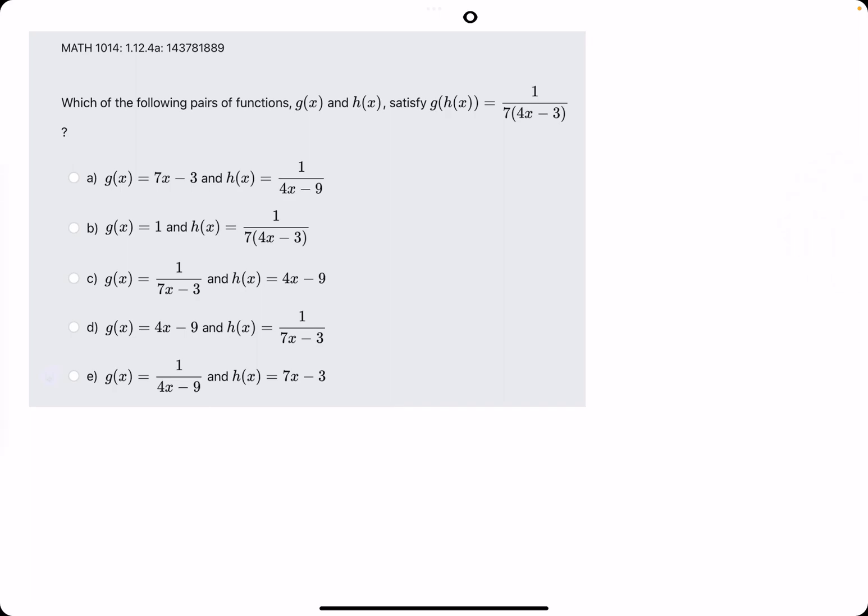You know, one of these options could actually form this g of h of x. So what does this mean? We're trying to find the h and g for which when h is plugged into the function g, we get this function as a result. So I would say maybe do a little trial and error and then see which possible options can make sense.